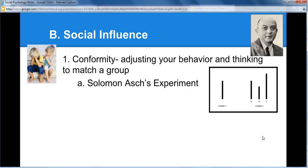They'd ask the fifth person which one they thought. That person is looking at it and says, I guess C. It's funny because even in the textbook they have a picture of this study, and you can see the confusion on the participants' faces — they're thinking, am I missing something? This looks pretty obvious, it should be A. But everybody else says C, so I guess I'll go with C. They must be right. You conform to what the group is saying and adjust your thinking to match the group.